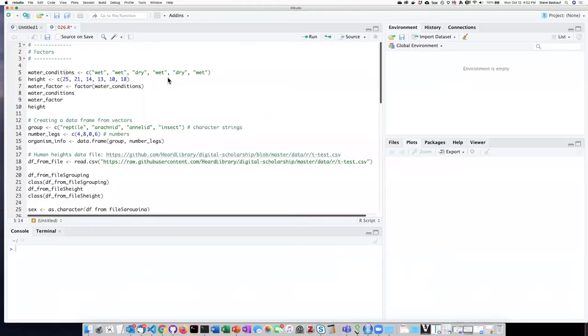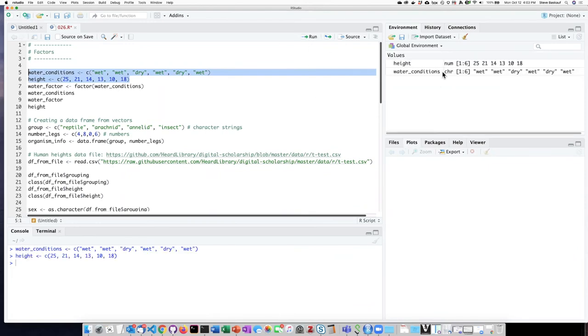Let's start by creating the two vectors. We've created one vector of characters, another vector of numbers. This is a continuous variable. This is a discontinuous one. We can turn the discontinuous variable into a factor by using the factor function.